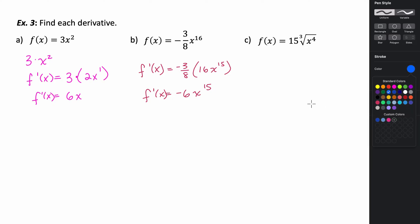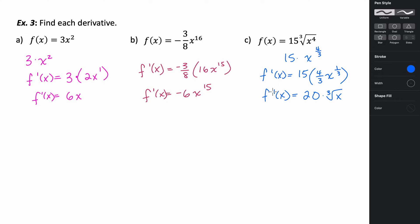For the last example, we can rewrite it as 15 times x to the four-thirds power. Taking the derivative, f prime of x equals 15 times four-thirds times x to the power of four-thirds minus one, which is one-third. So it's 15 times four-thirds x to the one-third. 15 times four-thirds equals 20, so f prime of x equals 20 times the cube root of x.